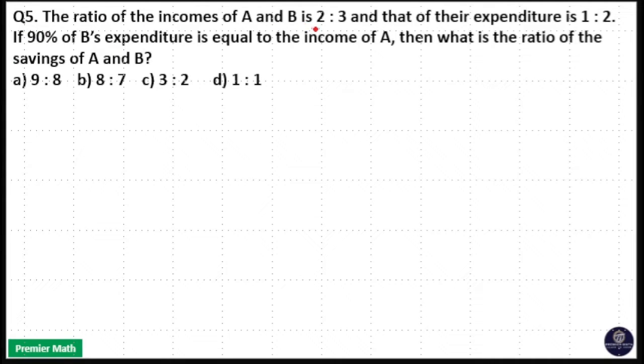The ratio of income of A and B is 2:3 and that of their expenditure is 1:2. 90% of B's expenditure is equal to income of A. Then what is the ratio of savings of A and B?